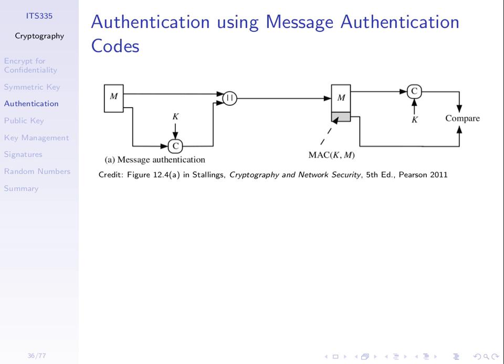It works assuming that the MAC function is such that a malicious user cannot determine the MAC value without knowing the key. It's the same principle as symmetric key encryption. If we get the MAC which matches this value using this key, then the value received must have been created with this key, and the only person who has this key is the original sender. A malicious user trying to pretend to be user A doesn't have the key K to make the MAC.